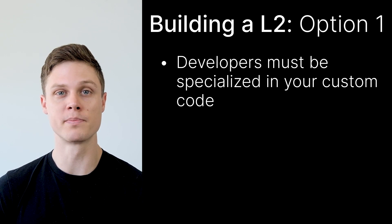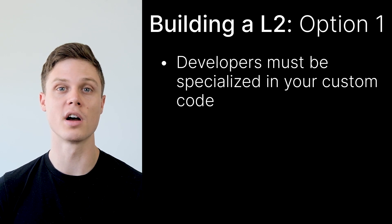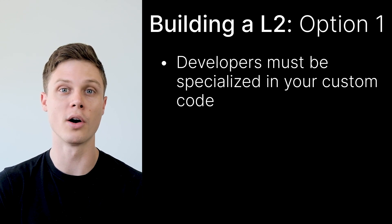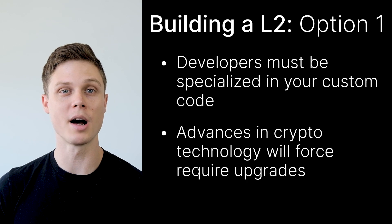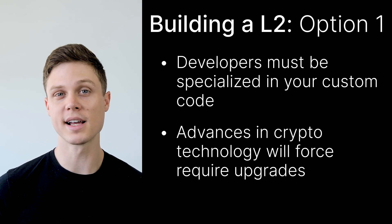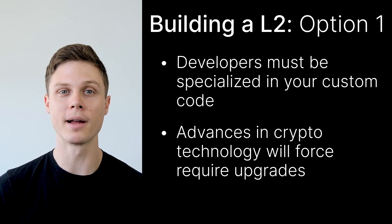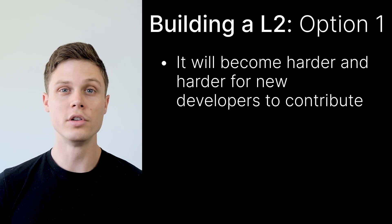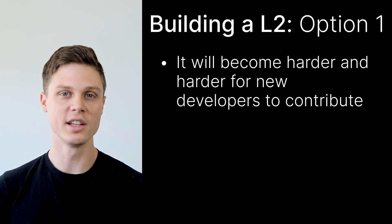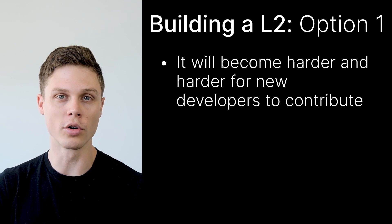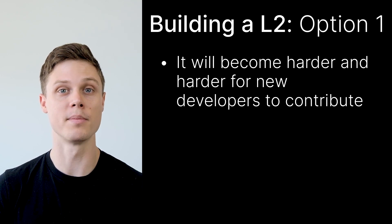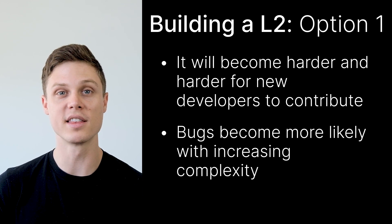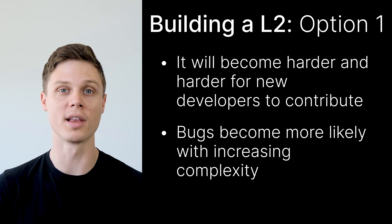But as crypto technology continues to advance, you'll need your own developers with specialized knowledge of your chain to write a lot of code in order to upgrade your network. Because the technology will never stop advancing, your codebase is likely to get bigger and bigger, and that code is likely to be more and more specific. New developers that want to contribute to your chain will have to work harder and harder to fully understand the codebase and make changes. As complexity grows, bugs in this system will become more and more likely.